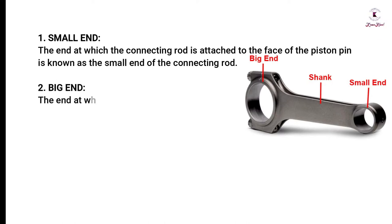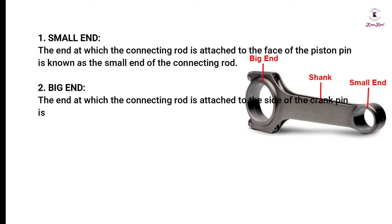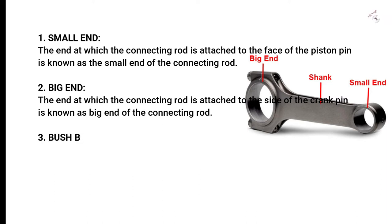Big end: The end at which the connecting rod is attached to the side of the crank pin is known as the big end of the connecting rod.